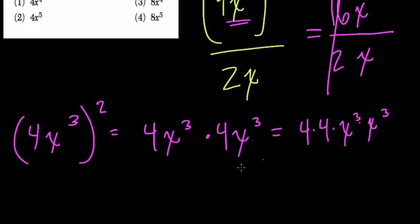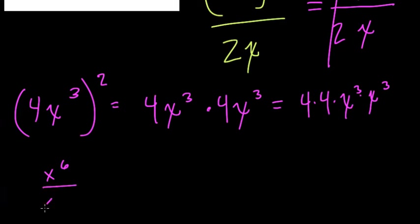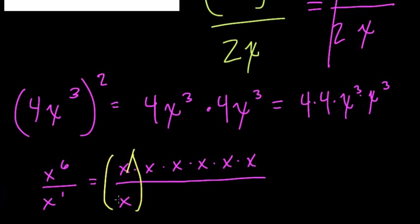What's the reasoning there? Well, x⁶ over x equals x⁶ over x¹. That's x times x times x times x, six times, right? Over just one x. When we divide anything by itself, here you see x divided by x that cancels out to 1 or subtracts.